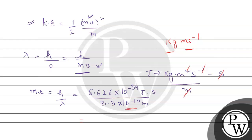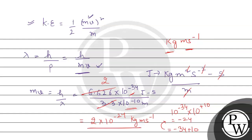Now solving: 10⁻³⁴ in the numerator and 10⁻¹⁰ in the denominator — bringing 10⁻¹⁰ to the numerator changes the sign, giving 10⁺¹⁰. Adding powers: −34 + 10 = −24. Dividing the numerical values and approximating, we get MV ≈ 2 × 10⁻²⁴ kg·m/s.